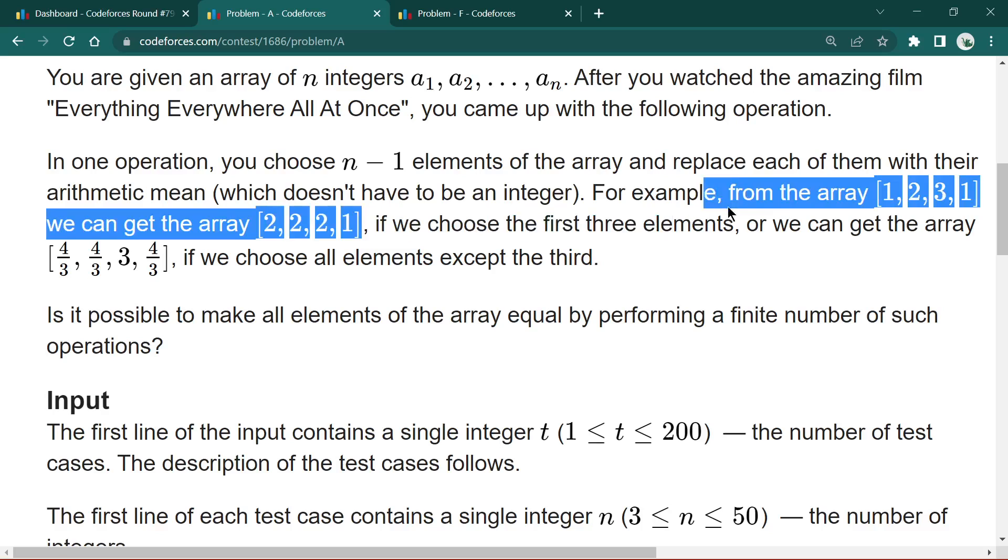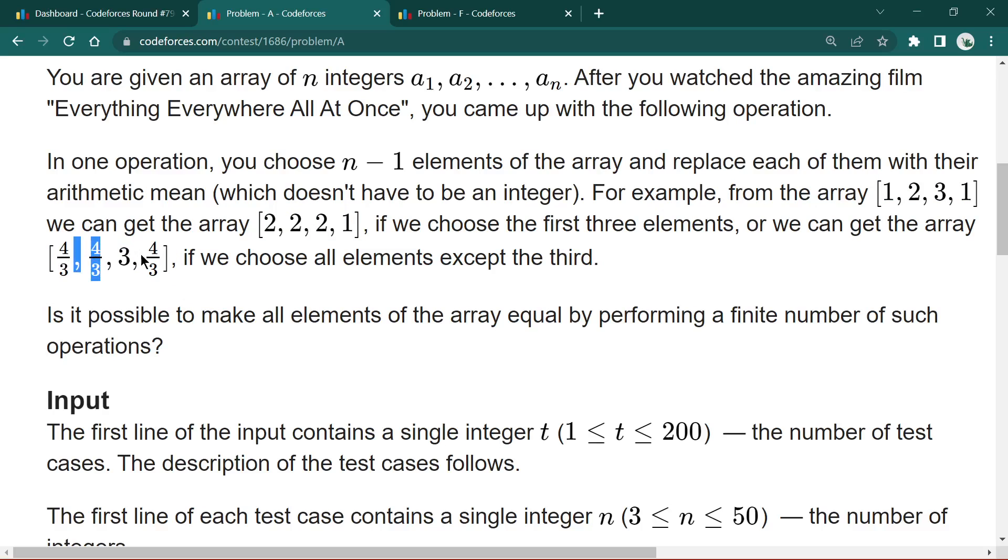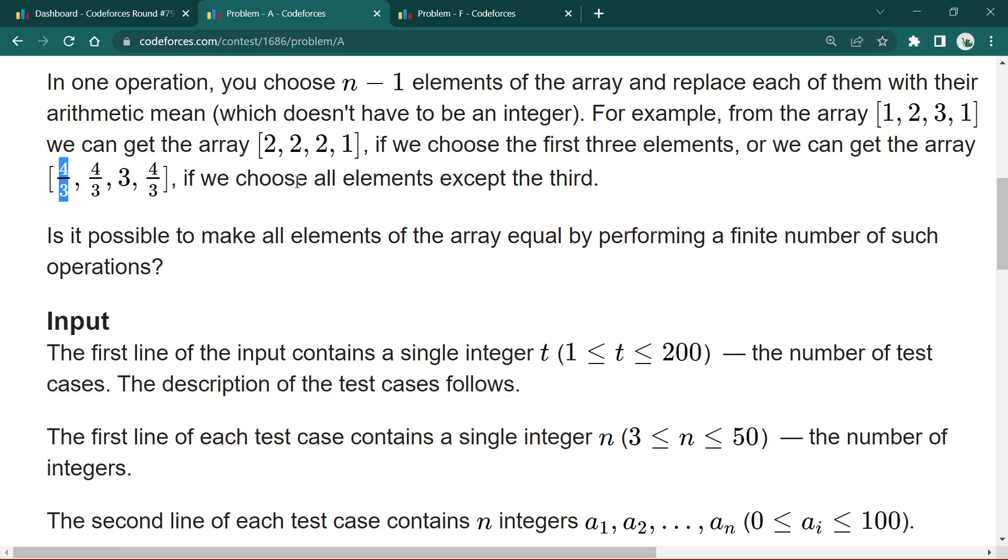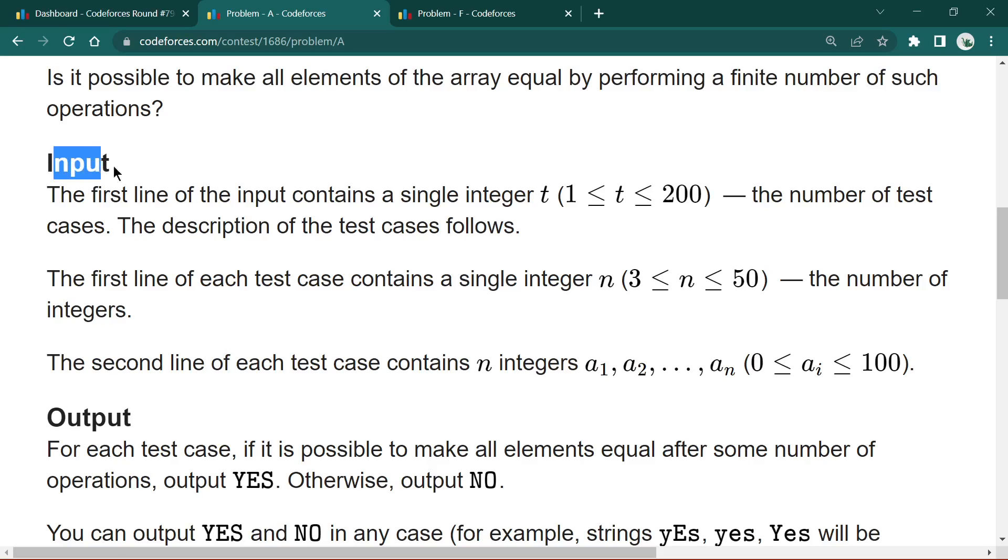If we choose the first three elements, we can get this array. If we choose these two elements and this one element and find their arithmetic mean, the mean will become 4 by 3 and replace all three elements by 4 by 3. If you choose all the elements except the third one, we have to find whether it is possible to make all the elements of the array equal by performing a finite number of operations or not.